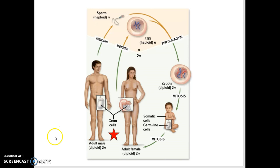So males typically produce sperm. Females produce eggs through the process of meiosis.